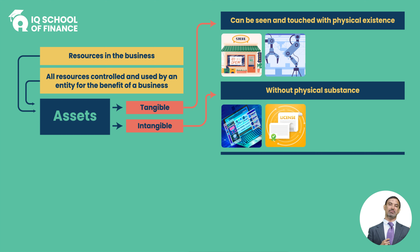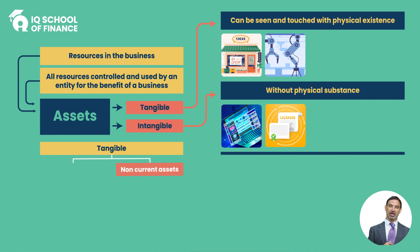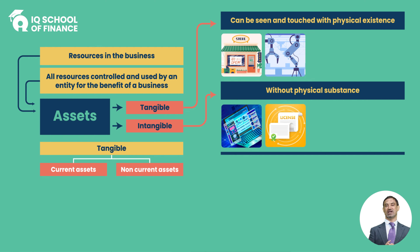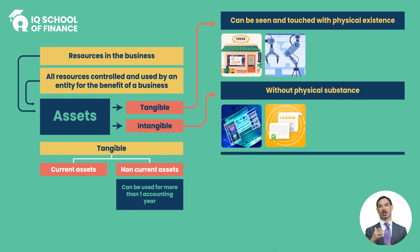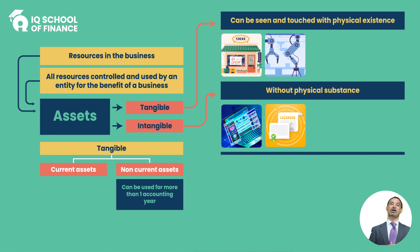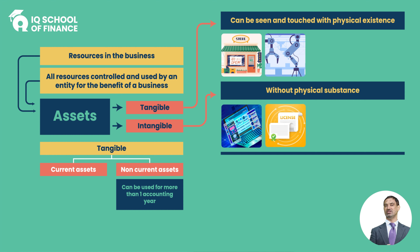Accounting experts ने tangible assets को further दो हिस्सों में divide किया है: non-current assets and current assets. Non-current assets को fixed assets भी कहते हैं। Non-current assets are which can be used for more than one accounting period - ऐसे तमाम assets जो एक साल से ज़्यादा अर्से तक use करते रहें, they are called non-current assets। Second point: which cannot change their shape easily - वो अपना shape इतनी जल्दी change भी नहीं करते।